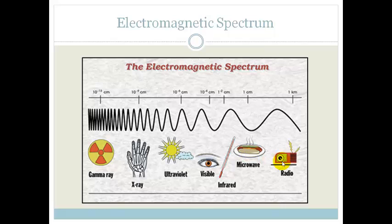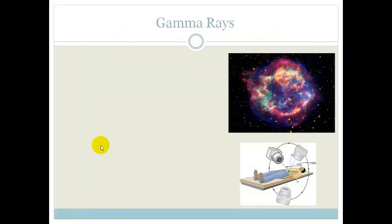Grade 10, you need to know the order in which these come. In other words, you need to know that your gamma rays are your high frequency, your X-rays are less high frequency, and you need to know the uses of each of these. So we're going to be going through that today.